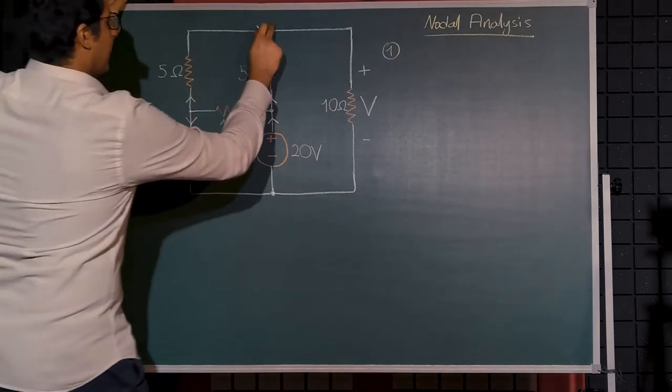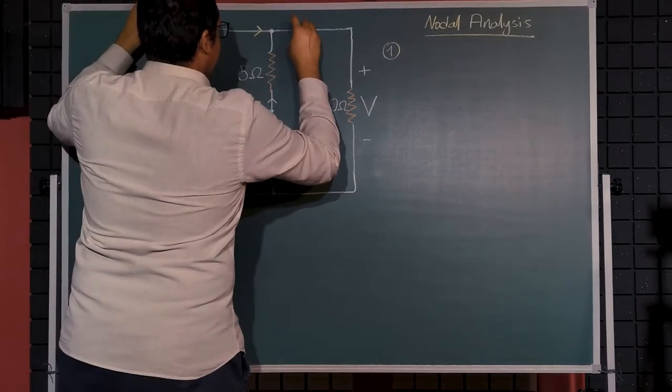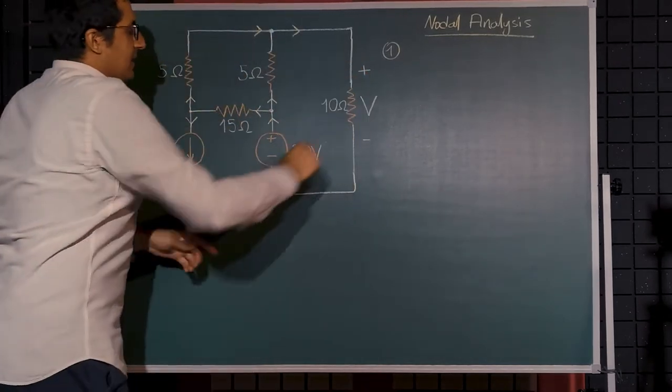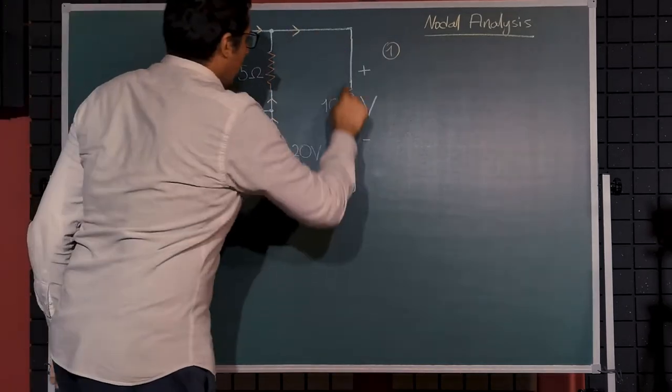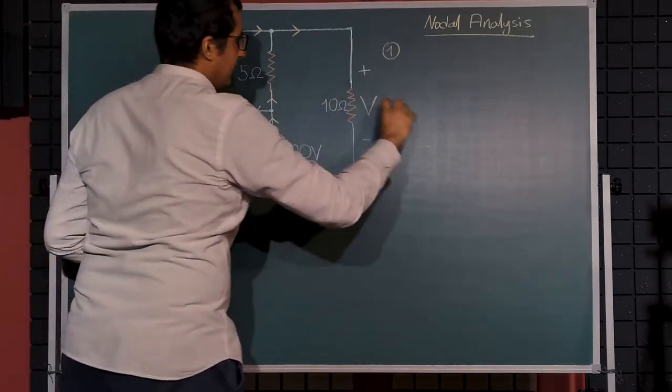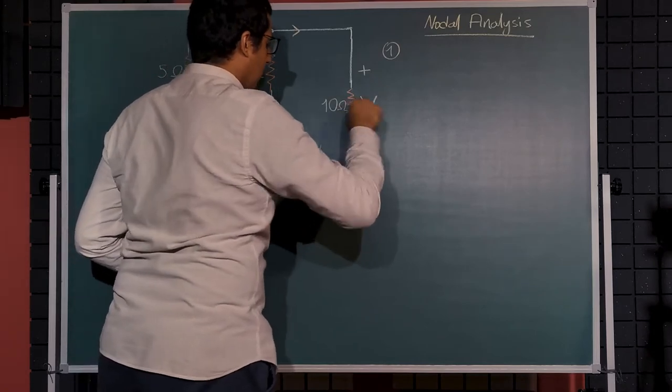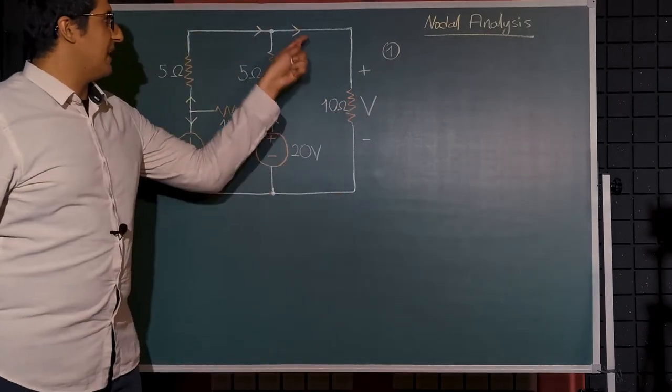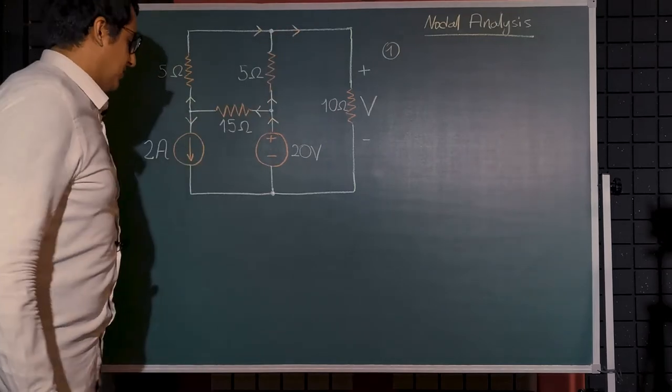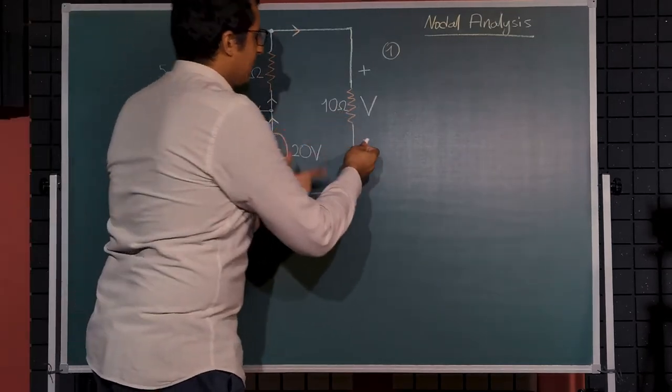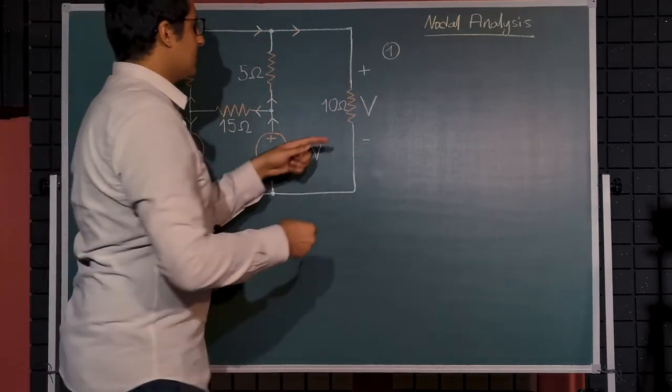Then it will branch, but since we assume this current flows in this direction, then it will not branch. Instead, these two currents will be summed at this node and flows towards the 10 ohms resistor. We can also verify from the voltage polarity at this 10 ohms so that the current flows in this direction.